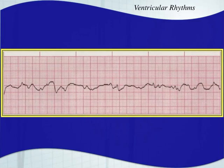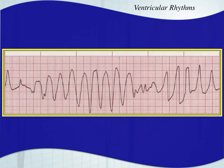Squiggly line, no organization, no P waves, no QRS complexes — that's V-fib. And looking at the next one again, you have that bow tie fashion — so we've got to think torsades de pointes.